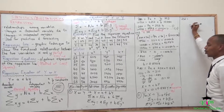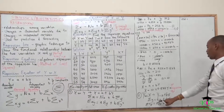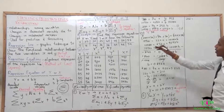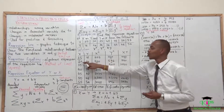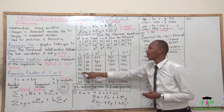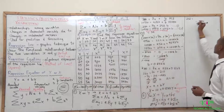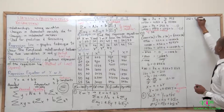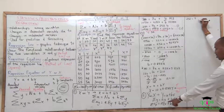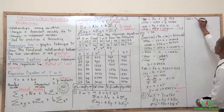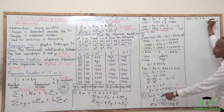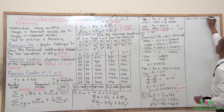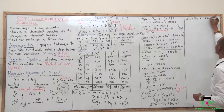It's equal to n, the number of variables that exist — counting them, we have 7. So 252 equals 7a, plus b times the summation of x, which is 280.